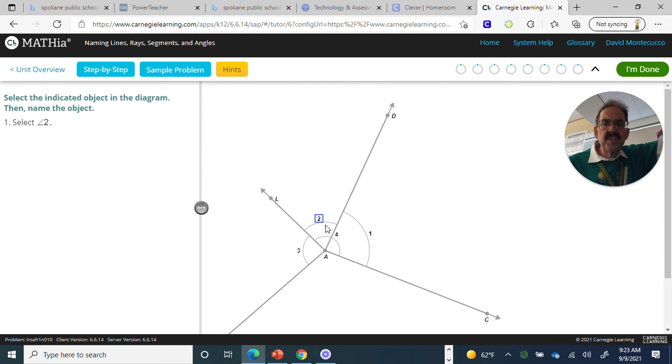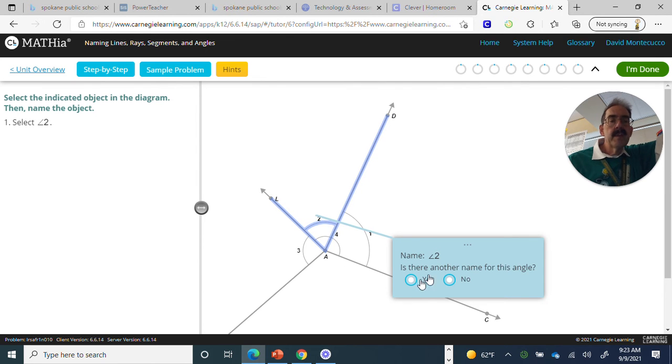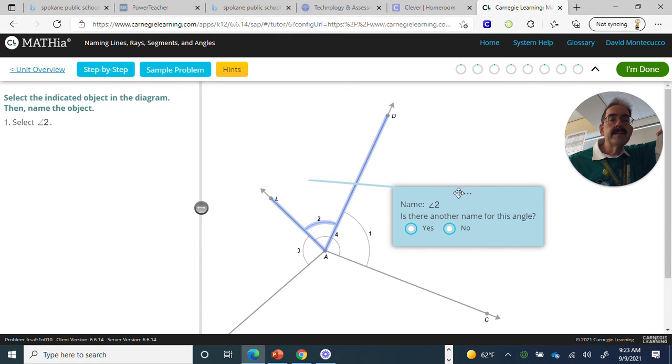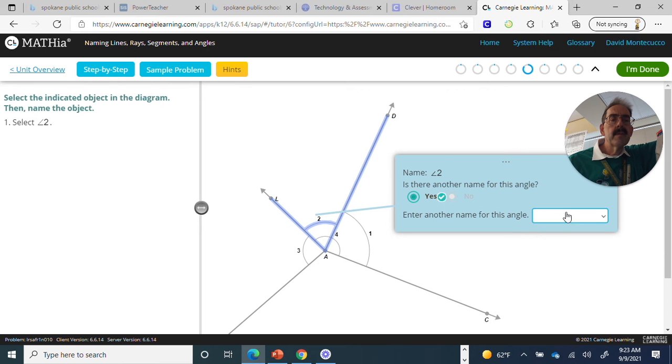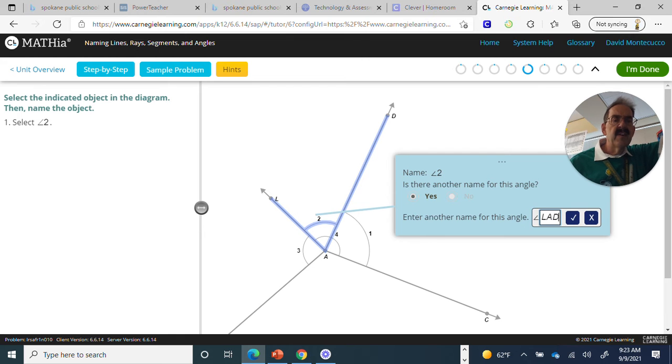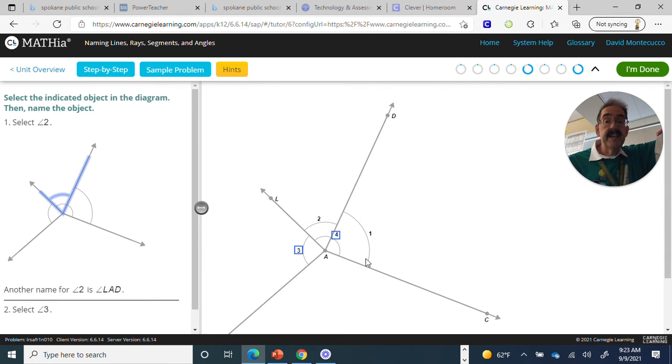Select angle 2. So, we're going to find angle 2, and we're going to click on it. Now, this is an angle. LAD. Don't like the way that loaded. So, angle 2 is the same as LAD, and DAL.